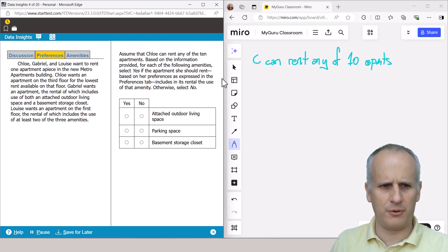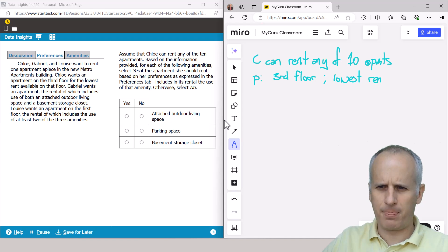So we read the preferences for Chloe. And it says Chloe, Gabriel, and Louise want to rent one apartment apiece in the new Metro Apartments building. Wonderful. Chloe wants an apartment on the third floor for the lowest rent available on that floor. So we're going to just put P for preferences. And she wants a third floor and lowest rent for that third floor. And then we've got Gabriel, and then we've got Louise, and I'm not even really going to take information down on Gabriel and Louise at this point. I just recognize that they're present on this preference tab if I got a question that asks about them later.